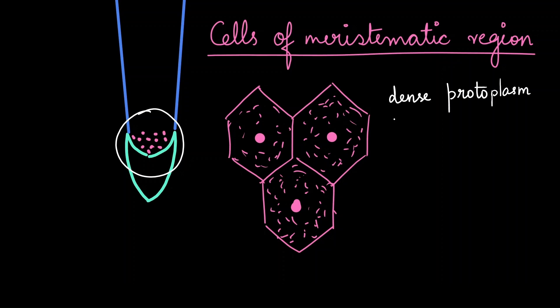The second feature is that these cells have thinner cell walls compared to a regular plant cell. Therefore, it doesn't hinder the process of cell division. And finally, to bring it all together, they have a well-defined nucleus.